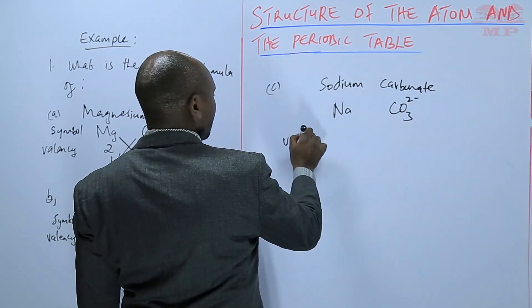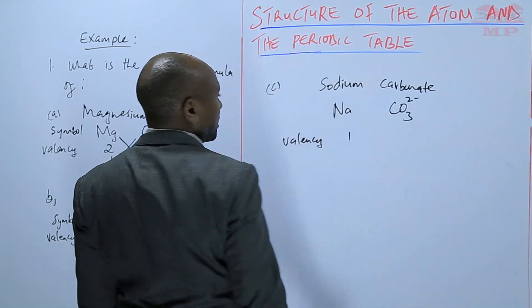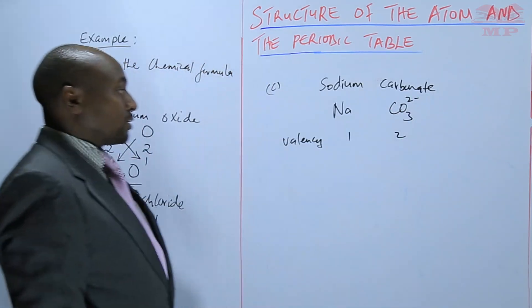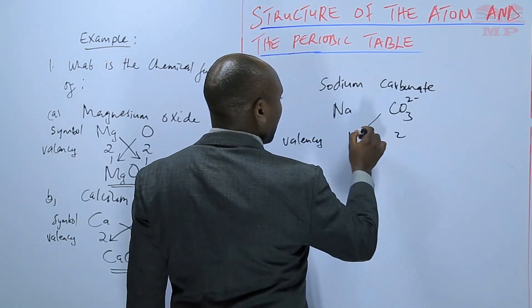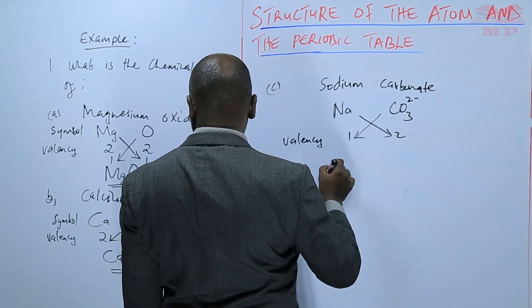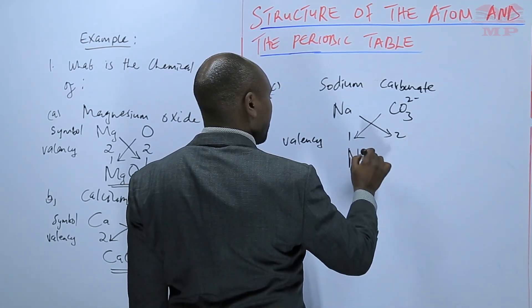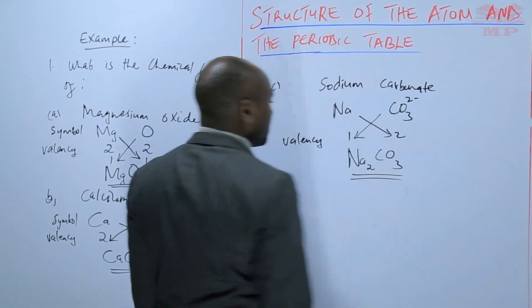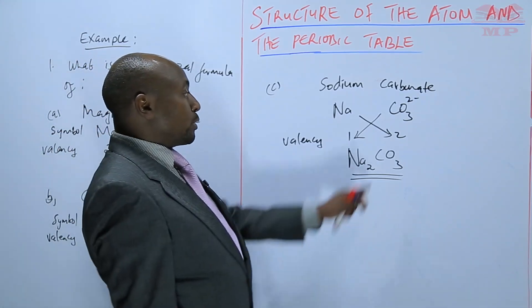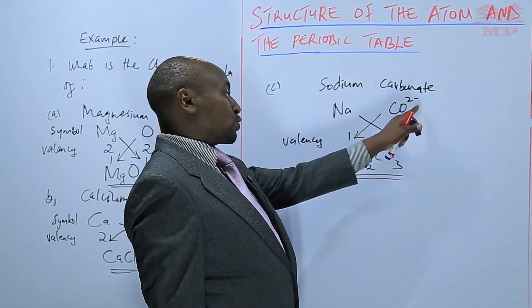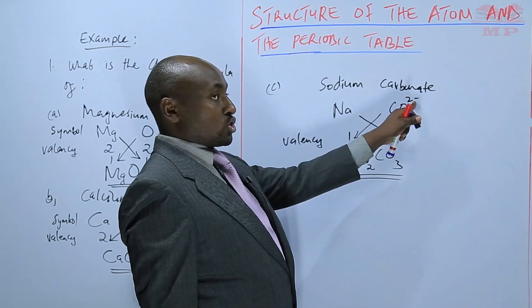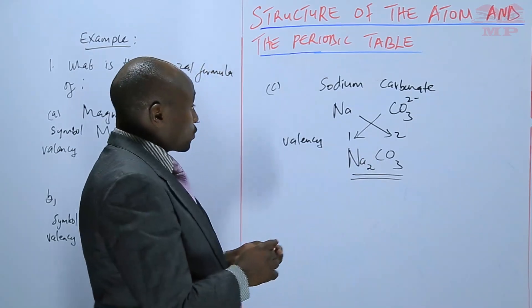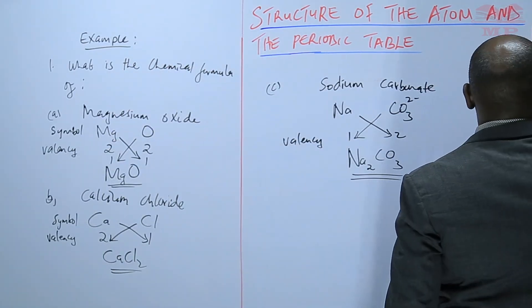The valency for sodium is 1, the carbonate, the valency is equivalent to the charge, it's equivalent to the oxidation number which is 2. So you cross multiply, sodium you multiply by 2, and then the carbonate you multiply by 1. So that will be the formula for sodium carbonate. So you will only use the charge to get the valency, so in the final answer you don't put the charge, the charge has already been neutralized. So that's the formula. So you'll have an assignment on that.